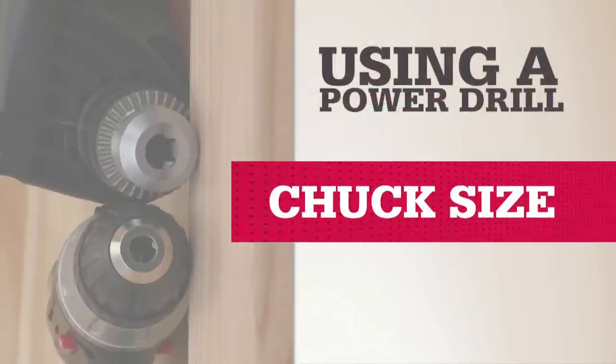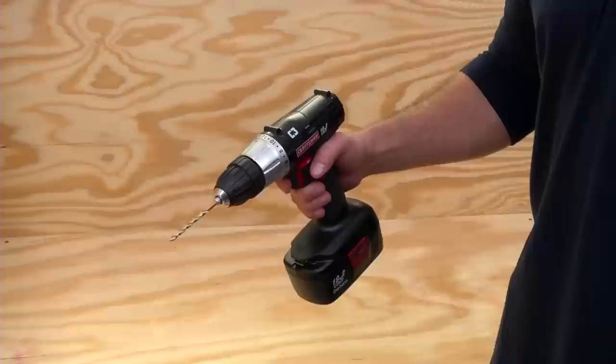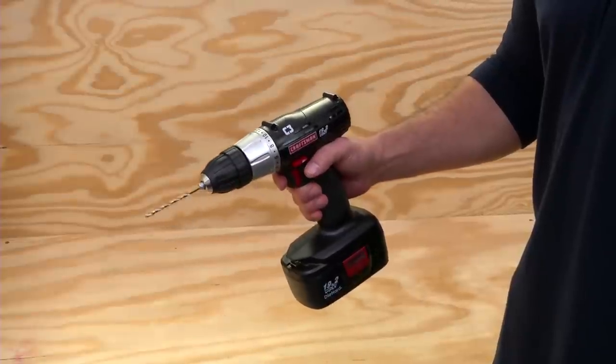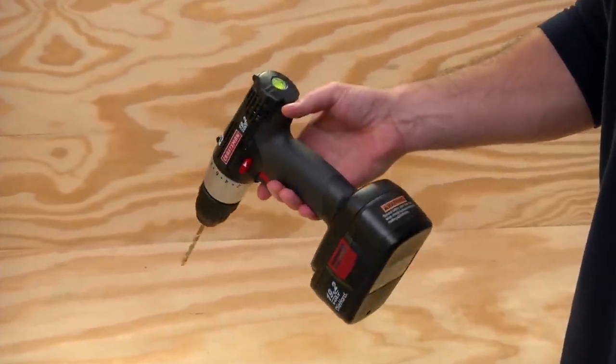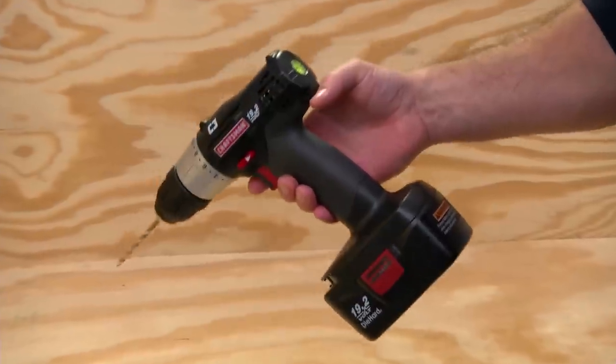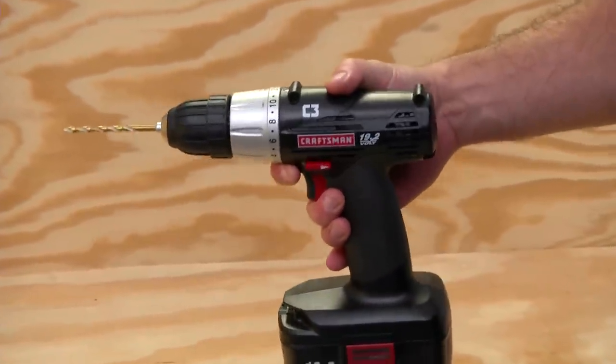The chuck also comes in different sizes. A smaller quarter or three-eighths inch chuck is adequate for light duty tasks. They tend to be smaller and lightweight, which is great when you're hanging items like curtain rods so your arms won't tire up.